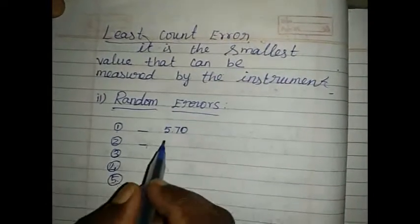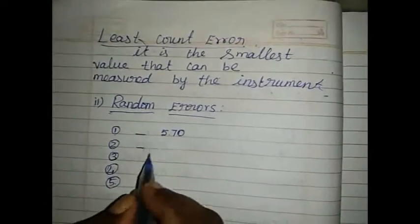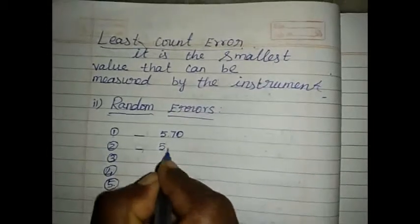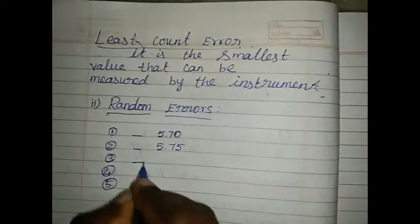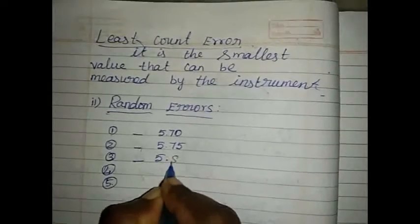In the second trial, in this pen, the value will be 5.75. In the third reading, the value will be 5.83.